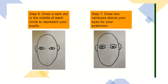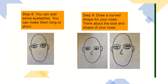Step 7: Draw two rainbows above your eyes for your eyebrows. Step 8: You can add some eyelashes — you can make them long or short, it's up to you. Step 9: Now look at your nose in the mirror. Do you have a long nose or a short nose? Is it pointy or a bit more round? Think about the size and shape of your nose, then draw it underneath your eyes in the middle of your face.